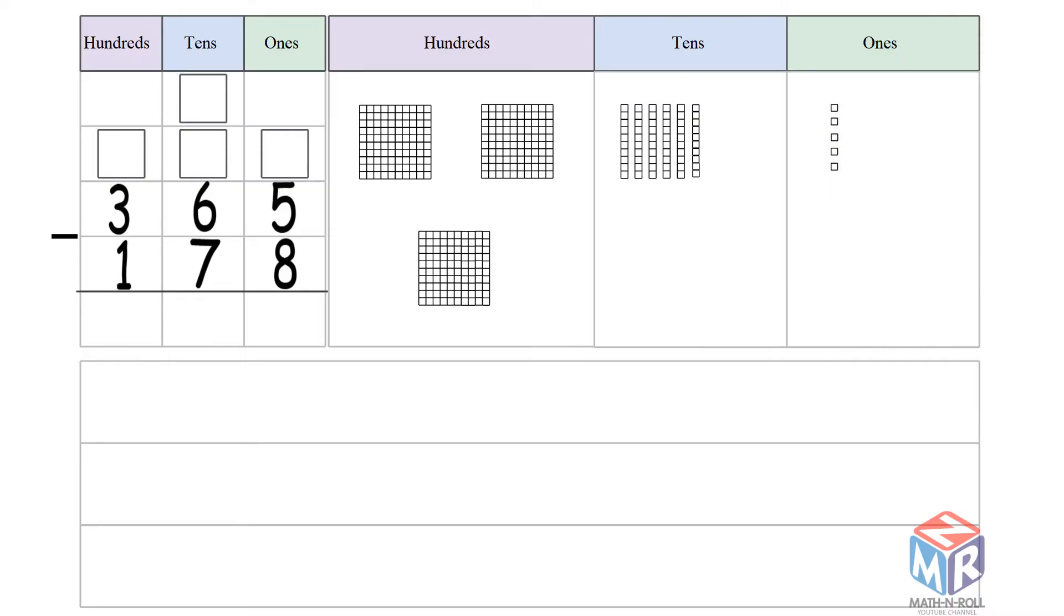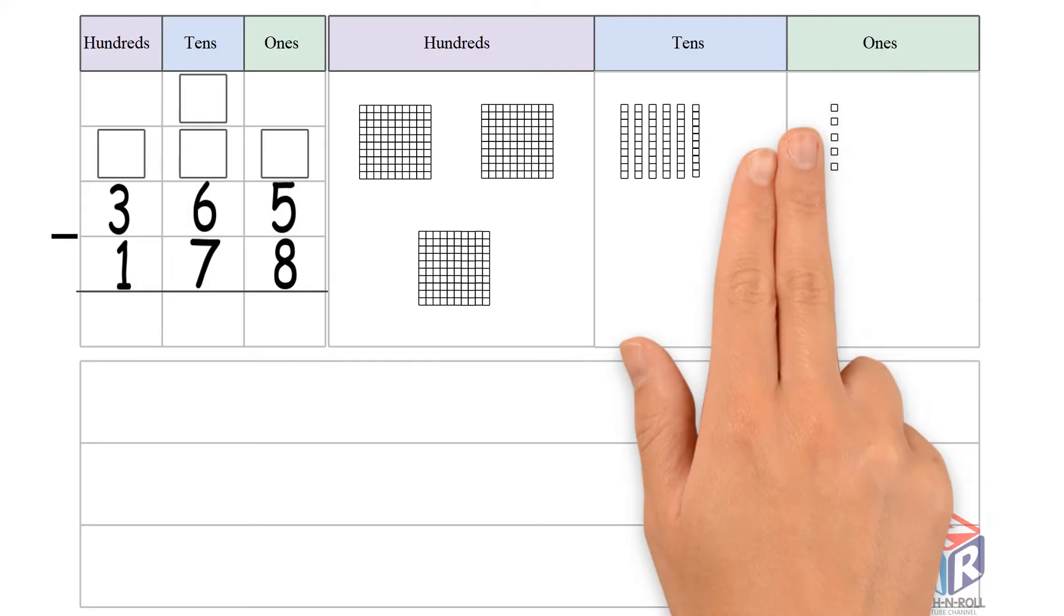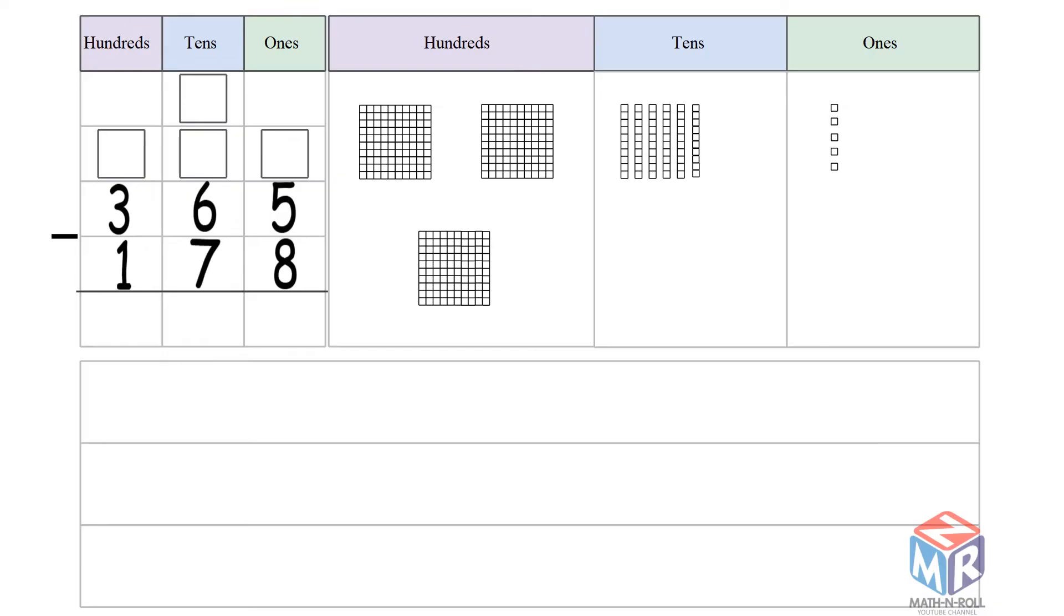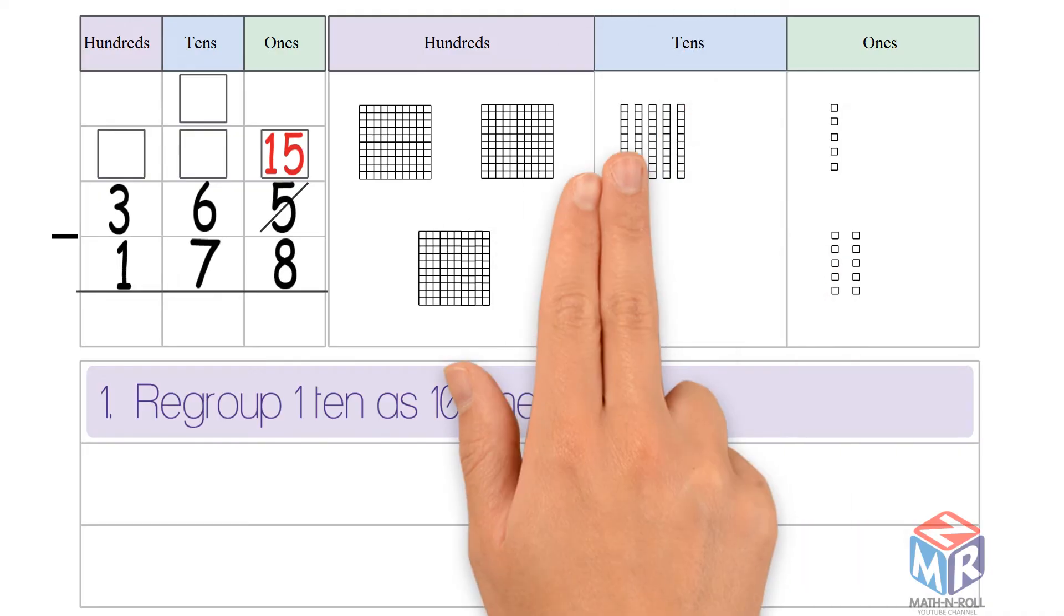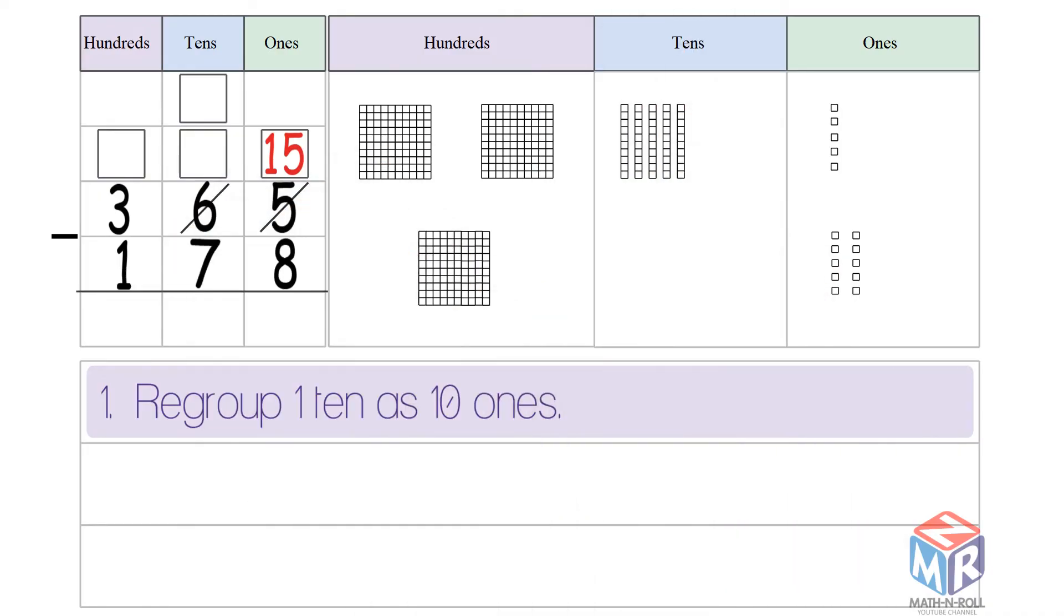Can you subtract 8 from 5? No. So we have to regroup 1 ten as 10 ones. Now we have 15 ones and 5 tens.